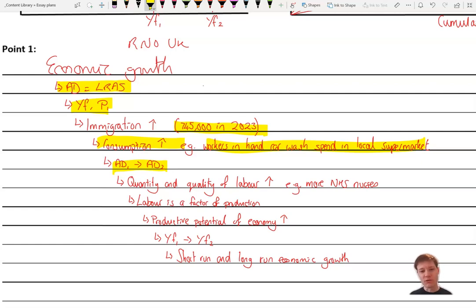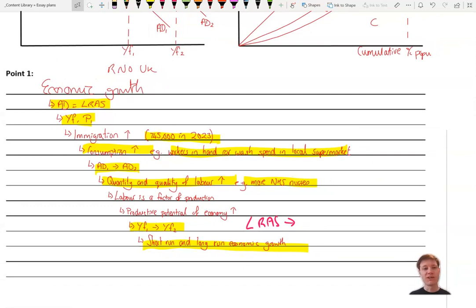But at the same time, because that's not a very expansive argument, we might want to shift LRAS as well. We might want to say that the quantity and quality of labor, and labor is a factor of production, therefore it will increase the productive potential of the economy. That will shift LRAS to the right from LRAS1 to LRAS2, and therefore the full employment output level of the economy will rise from YF1 to YF2. And that includes both the increase in AD in the short run, but also increase in LRAS in the long run, creating long run and short run economic growth. So powerful argument, and one of the most common arguments for supporting the idea of immigration.